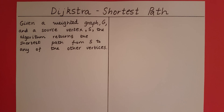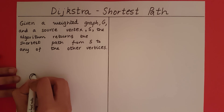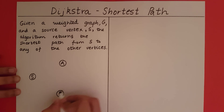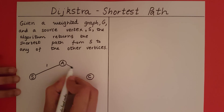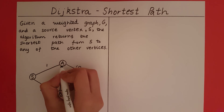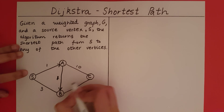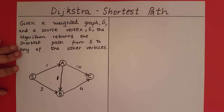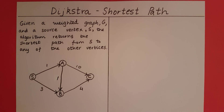Let me start with an example. Let's say that this is our example. Now given that the source is S, we want to find a path to each of the other vertices such that that path has the minimum weight.